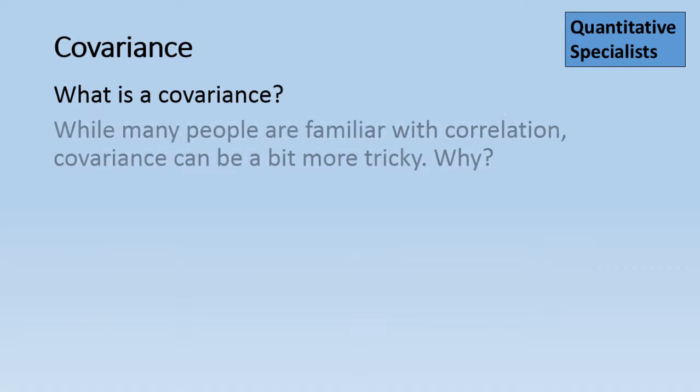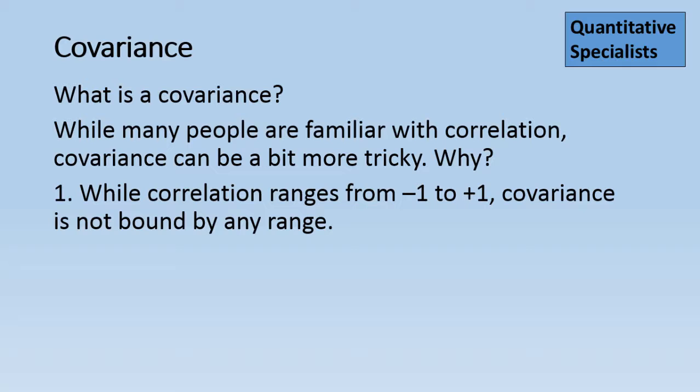So what is a covariance? While many people are familiar with correlation, covariance can be a bit more tricky. But why is that? Well, while correlation ranges from negative 1 to positive 1, covariance is not bound by any range at all.